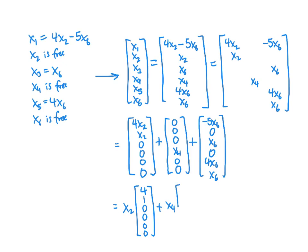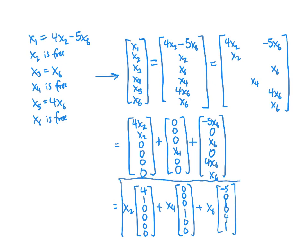Plus x4 times the vector (0, 0, 0, 1, 0, 0), plus x6 times the vector (negative 5, 0, 1, 0, 4, 1). This is what we're looking for when we say the parametric form of our solution. We say that x2, x4, and x6 are the parameters, and this gives us the parametric form of our solution.